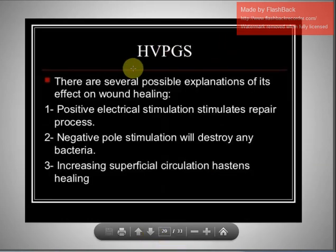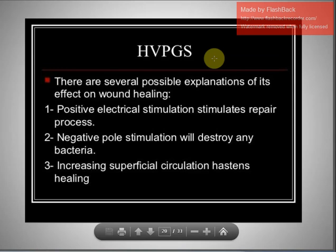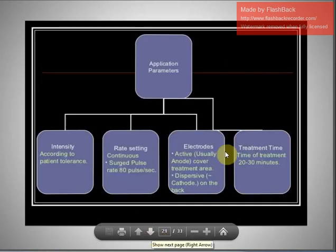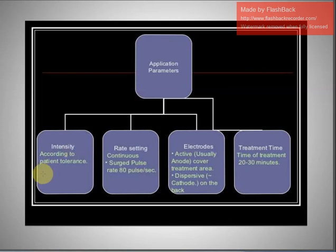High voltage pulsed galvanic stimulation is a useful modality with several possible explanations for its effect on wound healing. Positive electrical stimulation stimulates the repair process, negative pole stimulation destroys bacteria, and it increases superficial circulation to hasten healing. Application parameters: intensity adjusted according to patient tolerance, rate set to continuous or charged pulse rate of 80 pulses per second. The active electrode (anode) covers the treatment area with a dispersive cathode on the back; treatment time is 20 to 30 minutes.